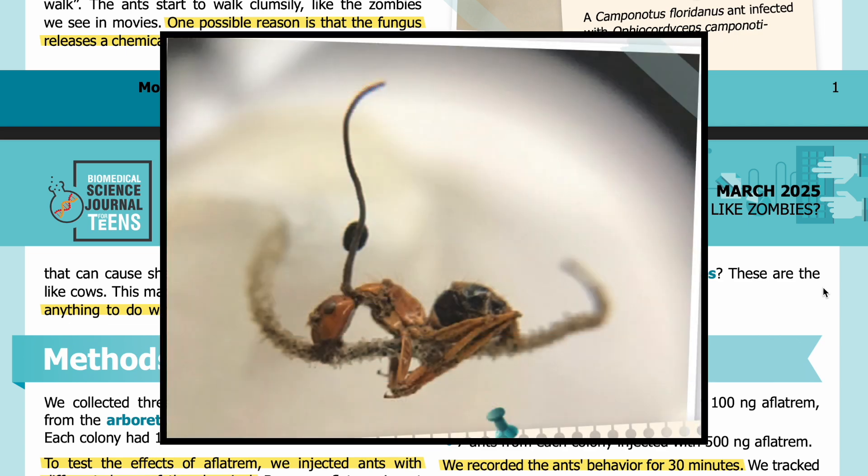In this image, you can see a Camponotus floridanus ant infected with Ophiocordyceps camponati-floridani. In the middle of the image is the ant. You can see the fungus growing out of the ant between the head and the thorax, towards the top of the image.